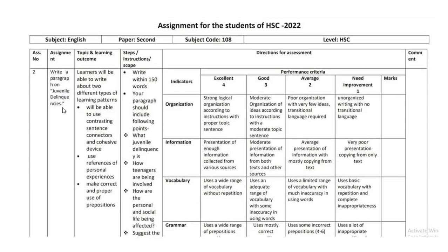The assignment is to write a paragraph on juvenile delinquency. Steps or instructions are used to write it within 150 words. This paragraph should include the following points. If you have the best points, you can follow them.